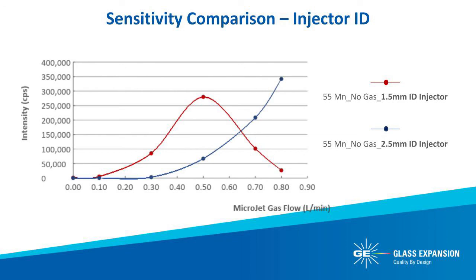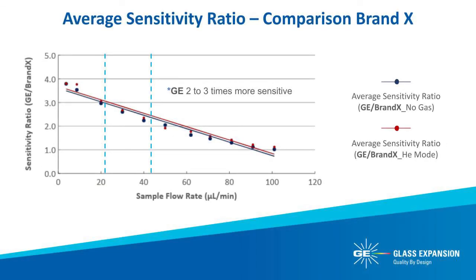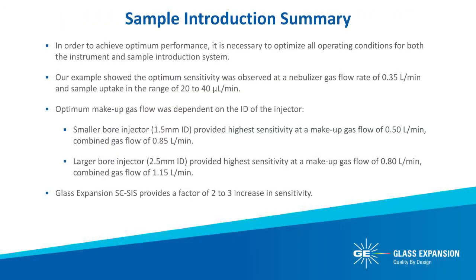This trend was similar for all 16 masses tested. We conclude our presentation with a comparison of the average sensitivity achieved with the Glass Expansion Single Cell Sample Introduction System versus another commercially available single cell sample introduction system, labeled as Brand X. The sensitivity ratio of Glass Expansion to Brand X was averaged for 16 masses ranging from low to high, at nebulizer sample flow rates from 4 to 100 microliters per minute, using a 1.5 mm ID quartz injector at 0.35 L/min nebulizer gas flow and 0.5 L/min makeup gas flow. It is necessary to optimize all operating conditions for both the instrument and sample introduction system to achieve optimum performance, and these optimum conditions should be used as guidelines and a great starting point for your own optimization.